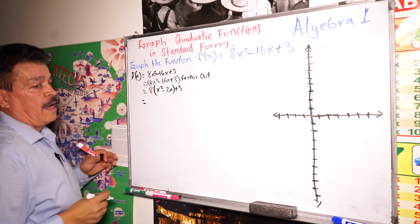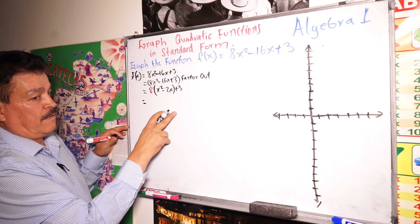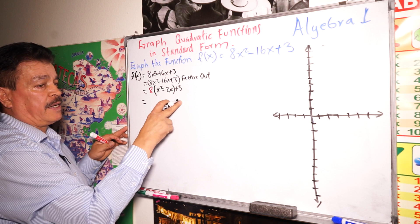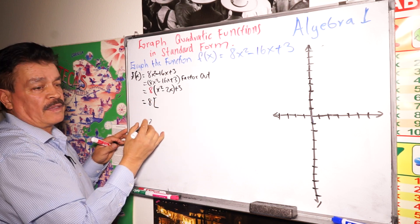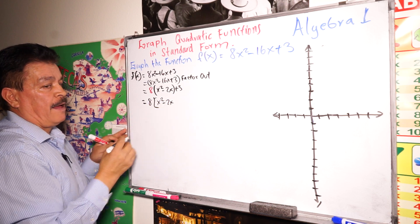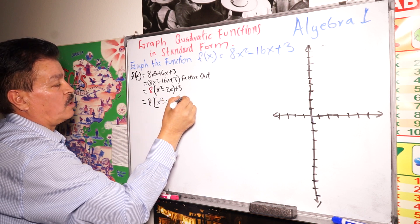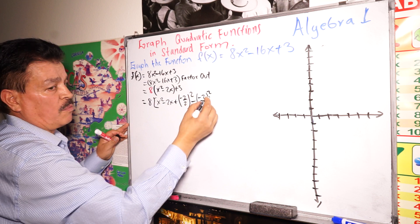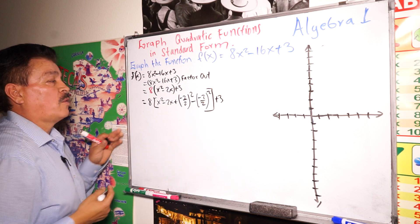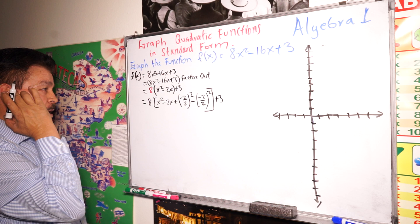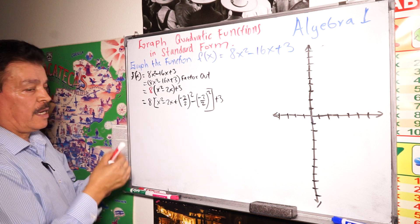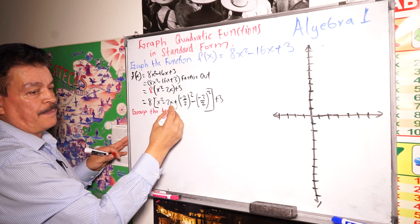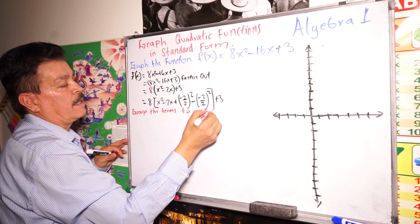The next step is to complete the square. We have 8 times (x squared minus 2x). To complete the square, we use the formula: take the coefficient of x, which is negative 2, divide by 2, and square it — that's (negative 2 divided by 2) squared — then add and subtract that value, plus 3.